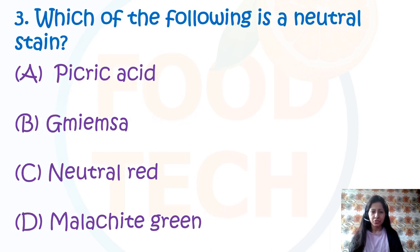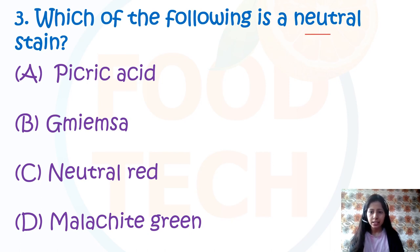Question 3: Which of the following is a neutral stain? Option A: picric acid, option B: Giemsa, option C: neutral red, option D: malachite green. Neutral stains are those stains that do not have affinity for either acidic or basic components of the cell.